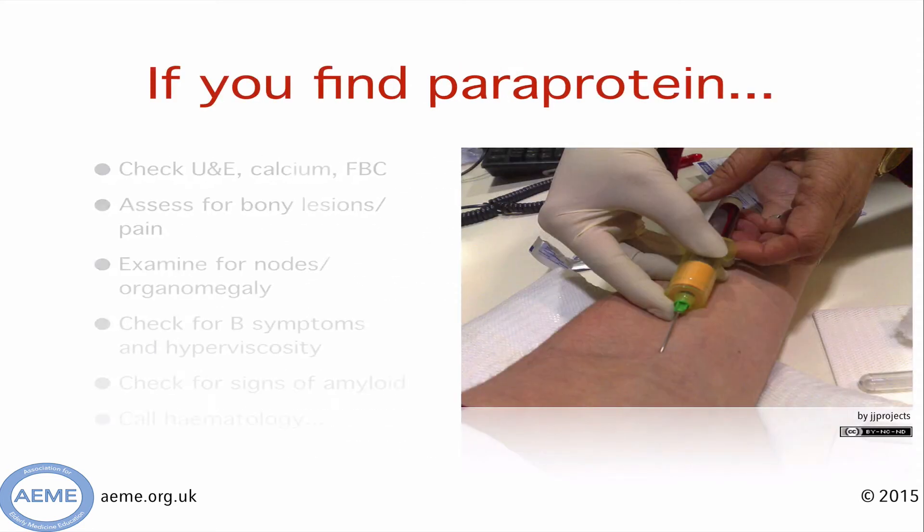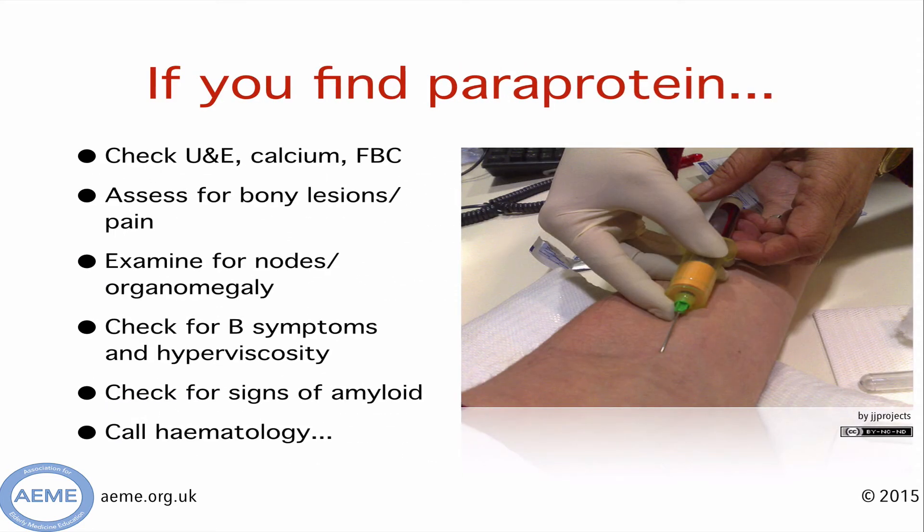In summary, if you find a paraprotein, the patient will require usual blood workup and also assessment for bony pain, lymphadenopathy, organomegaly, B symptoms, hyperviscosity-type symptoms, and also signs of amyloid. For all patients, haematology should be consulted for further advice on management and monitoring.